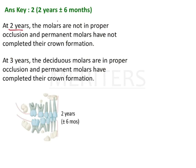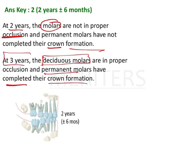At 2 years, the molars are not in proper occlusion and the permanent molars have not completed their crown formation. Both these things have not been attained here — no proper occlusion and no proper formation of the crown. That's why it should be less than 3 years, around 2 and a half years, by which time all the primary dentition teeth erupt. So we go with 2 and a half years, or 2 years plus minus 6 months, as the correct answer.